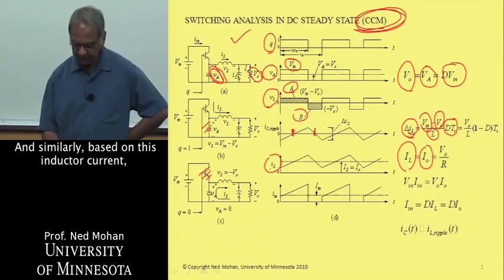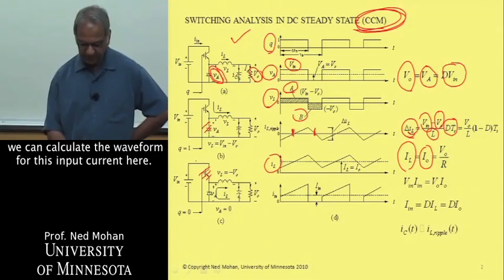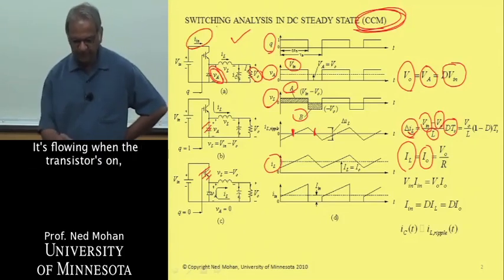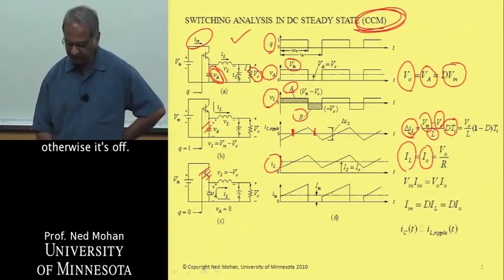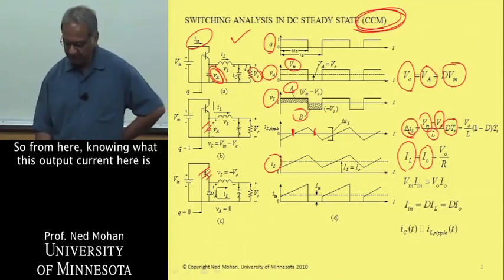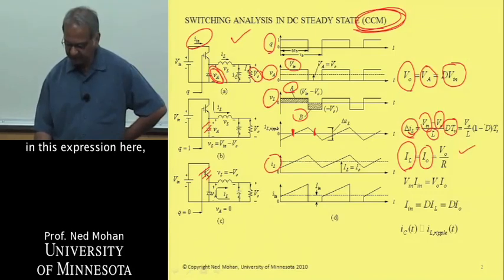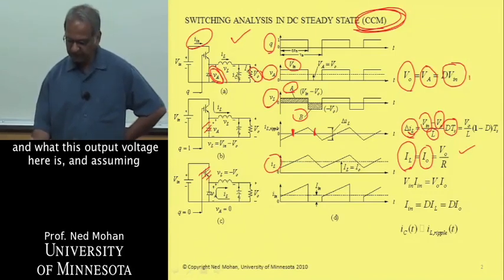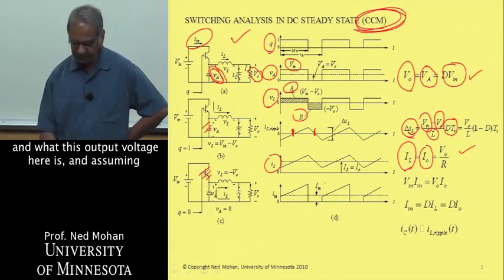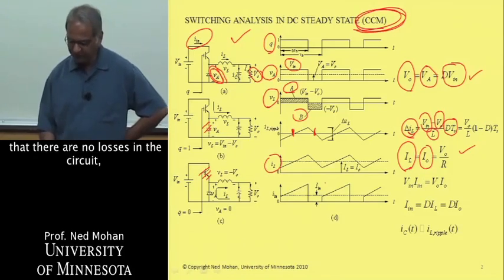And similarly, based on this inductor current, we can calculate the waveform for this input current here. It's flowing when the transistor's on, otherwise it's off. So from here, knowing what this output current here is in this expression, and what this output voltage is, and assuming that there are no losses in this circuit.